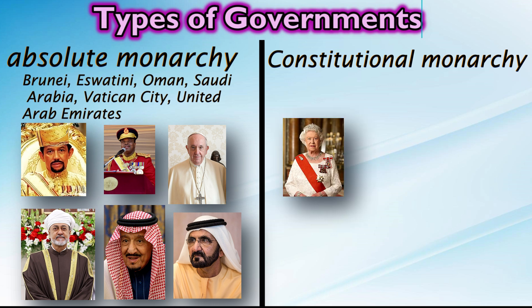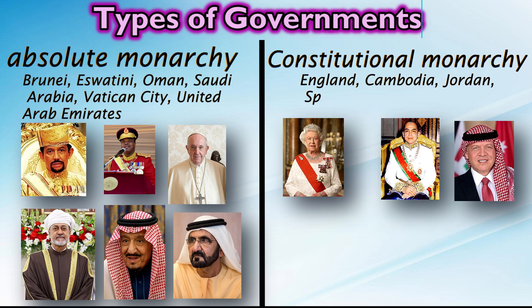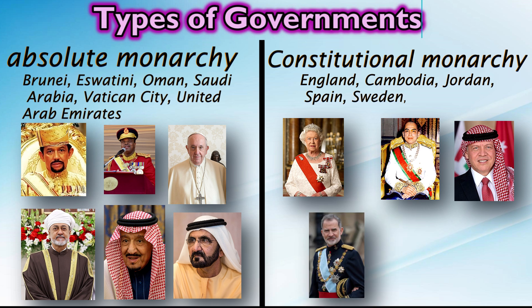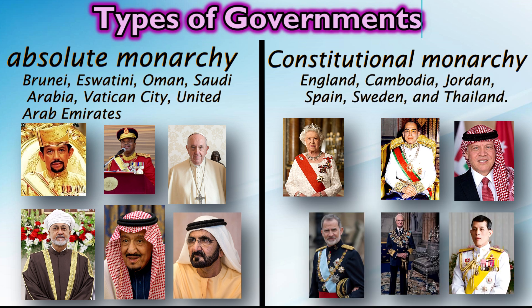Countries like England, Cambodia, Jordan, Spain, Sweden, and Thailand are examples of constitutional monarchy.